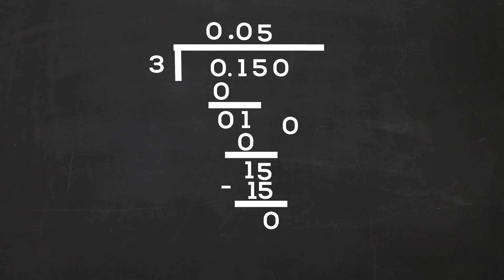Let's bring down the final 0. 3 goes into 0, 0 times. 0 times 3 is, yes, you guessed it, 0. 0 minus 0 is 0. So, 0.150 divided by 3 is 0.050.